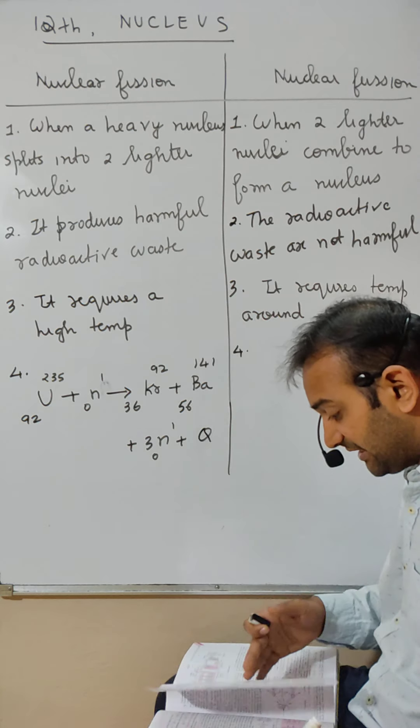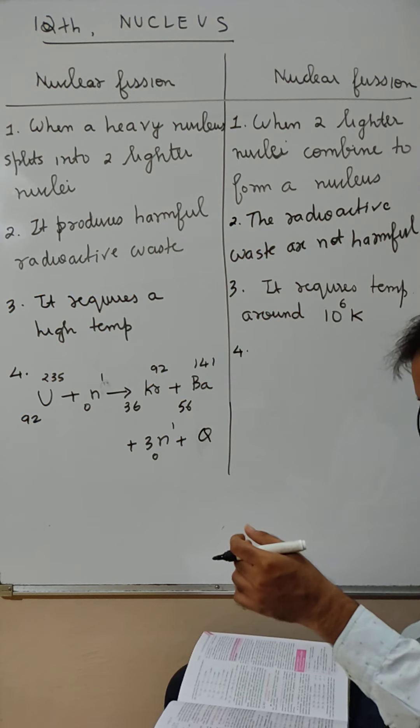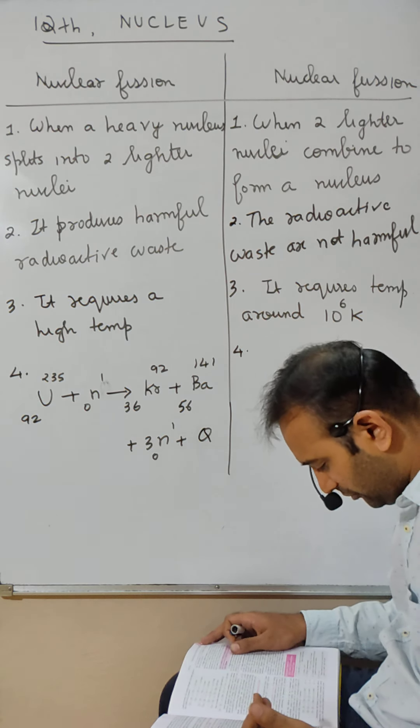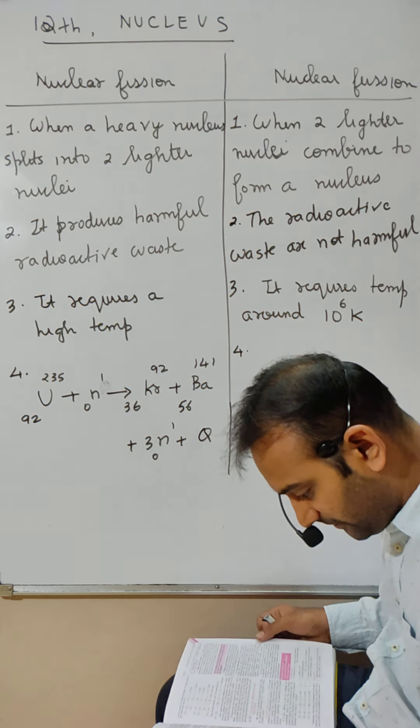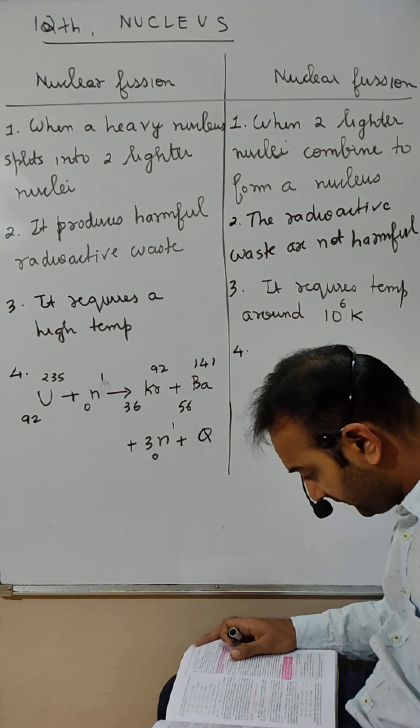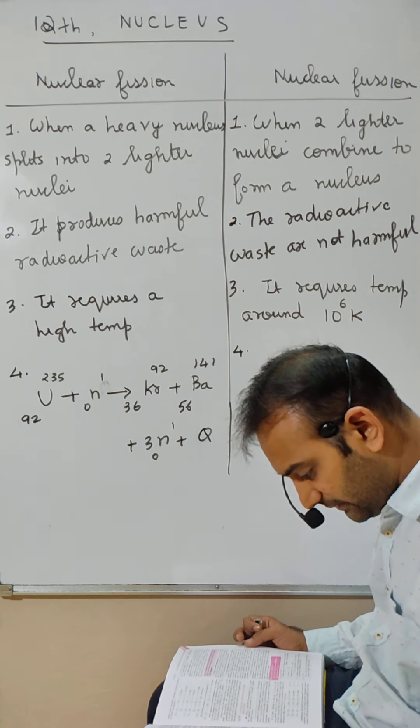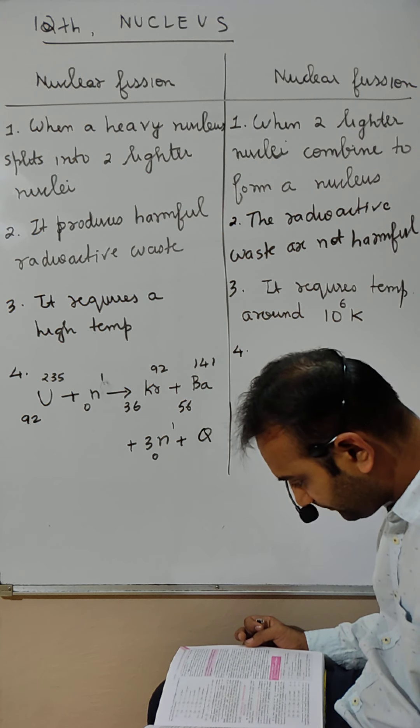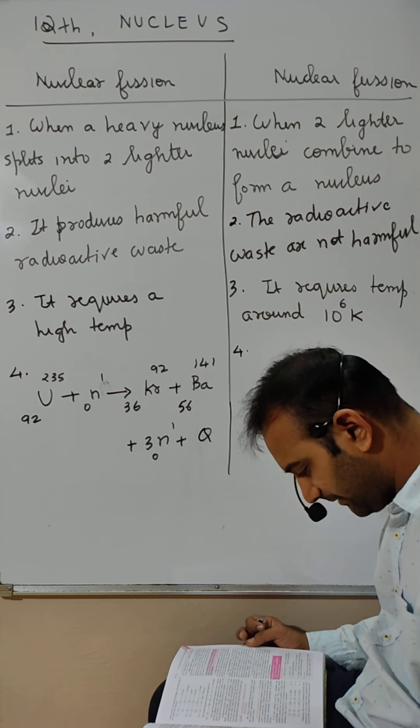Fission is done. Coming to fusion, how does fusion occur? In fusion, two hydrogen combine to give helium. There are different proton cycles here, different reactions, but I'm searching for one typical example where two hydrogen combines to give helium. There are many different reactions. Finally we should get helium.